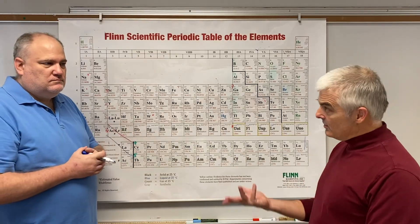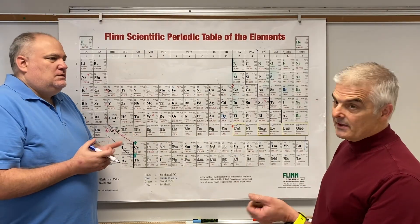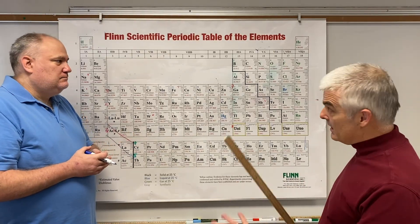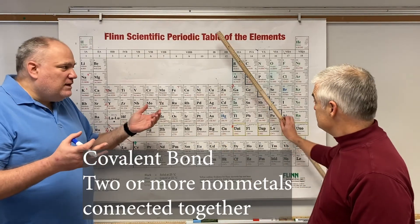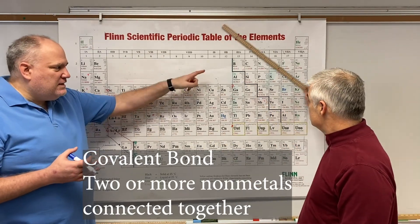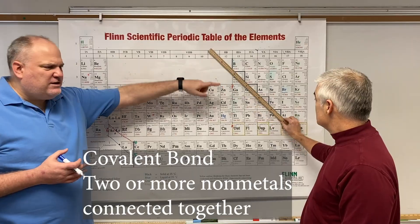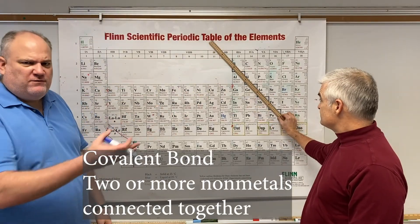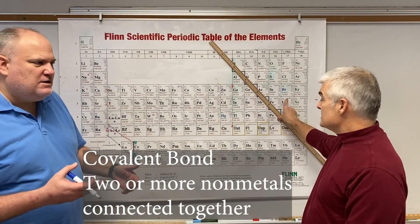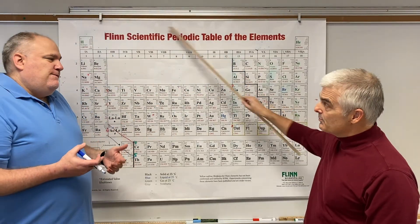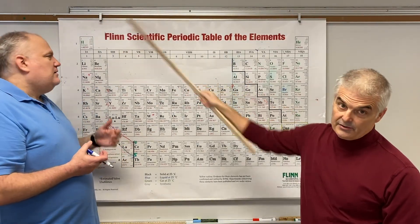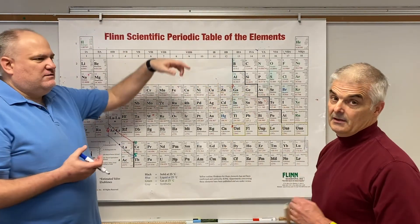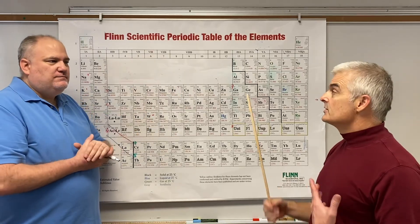And lastly, there are covalent bonds — that's between two non-metals. That little staircase on the periodic table becomes important here, because these non-metals connect to each other, plus hydrogen. Hydrogen is kind of a traitor.